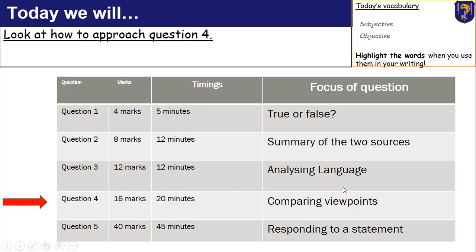The crucial thing about this question is that it is comparing viewpoints. A lot of students end up confusing Question 2 and Question 4. Question 2 is simply a summary, whereas Question 4 is the comparison of viewpoints. Question 2 is really a summary of what happens in the source relating to a specific topic, whereas Question 4 is really looking at what they think about the topic. So you're telling me what happens like in Question 2, but then crucially analysing the language as well — it's really a combination of Questions 2 and 3. This is arguably the most important question to get your timings correct, because students often spend too long on previous questions.